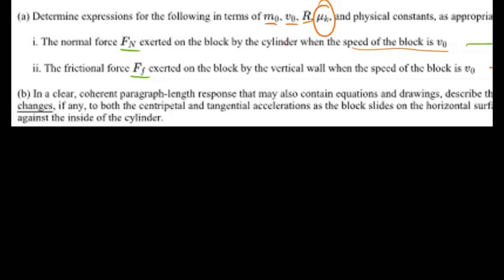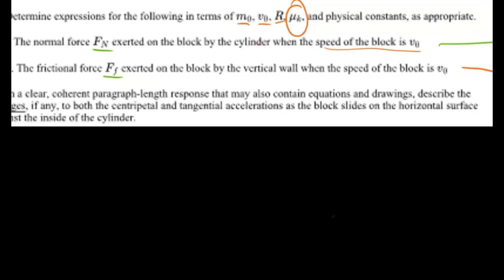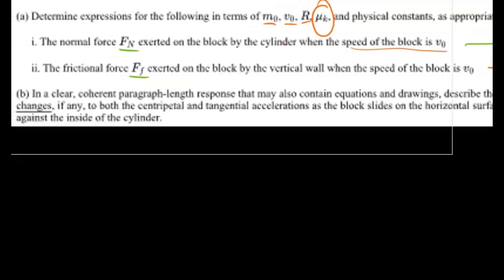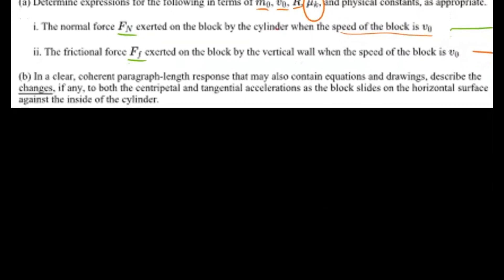So for b, this is the clear, coherent paragraph response that can also contain equations and drawings. They want us to describe the changes, if any, to both the centripetal and tangential accelerations as the block slides on the horizontal surface against the inside of the cylinder. So just for time purposes, I won't write every single variable out, but I'll try my best here.